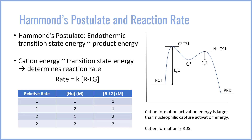You'll often see that information presented in a table where you have the relative rate of a reaction plotted against concentrations of the nucleophile and the initial compound of the leaving group. When you double the concentration of the nucleophile — the second row in our table here — you notice the rate does not change.